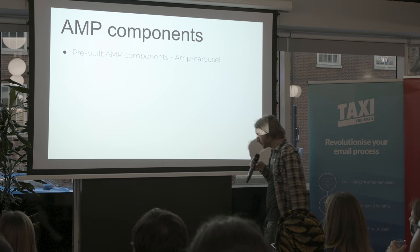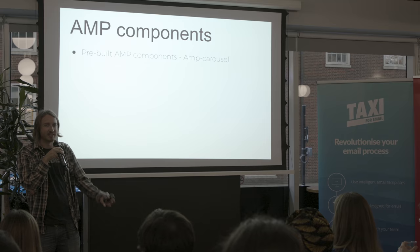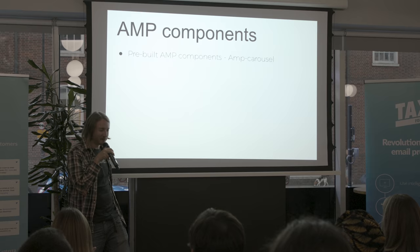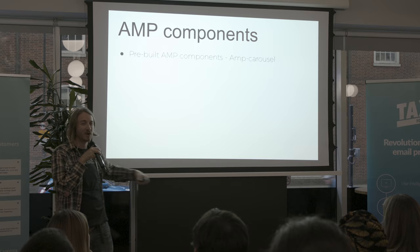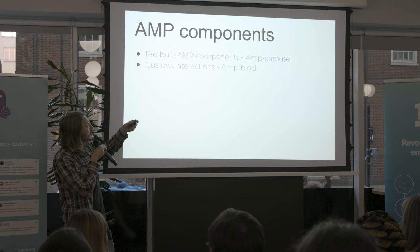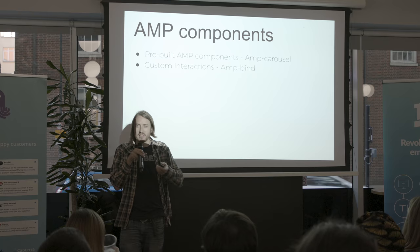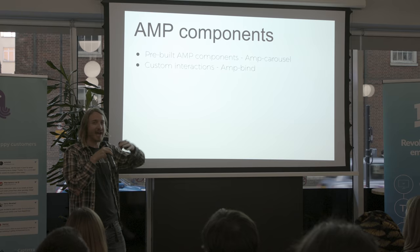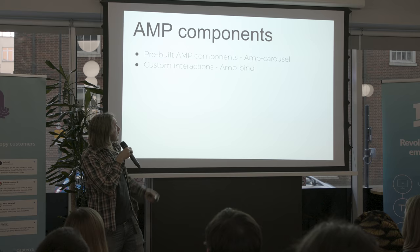That takes me on to the components. There are a number of pre-built AMP components, such as AMP Carousel, which is basically an image gallery. I'm a bit annoyed they called it carousel rather than gallery, because there are negative connotations with carousels — galleries are fine, carousels are bad. Then you can do custom interactions with AMP Bind. You could rebuild the carousel with AMP Bind completely. It works a similar way — it's basically JavaScript click events. You can add a class, change a class, add or change attributes on elements, and from there you can do a lot of different things.